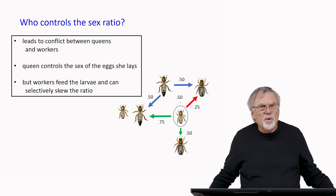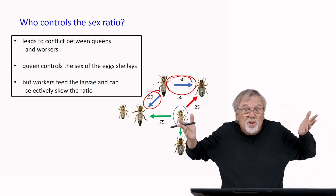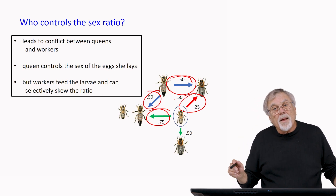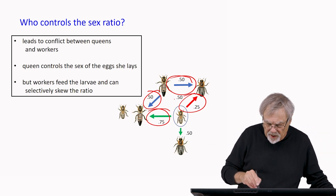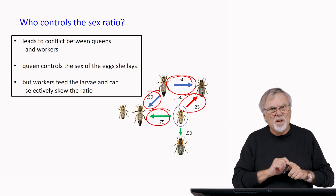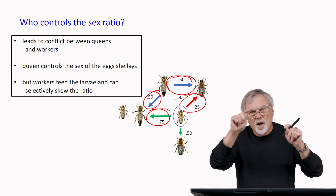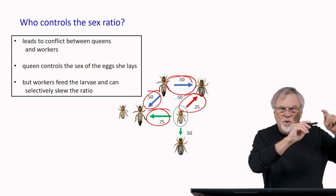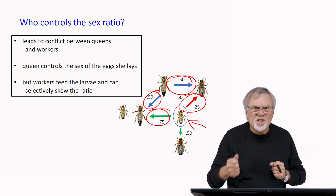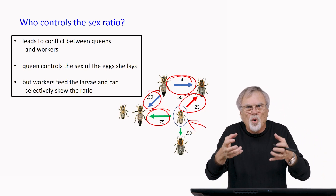This also sets up conflict over who controls the sex ratio. The queen is equally related to her sons and daughters, so she wants to see a one-to-one sex ratio — she has no reason to skew it. But the workers have an evolutionary reason to skew that sex ratio towards their sisters. The queen lays all the eggs and can control whether they're fertilized or unfertilized — she lays unfertilized eggs in cells for males and fertilized eggs in cells for females. But the workers feed them and can eat those larvae instead of feeding them. So there's conflict between the queens and the workers over who controls the sex ratio.